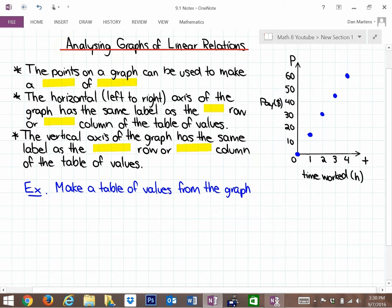The first thing to understand is that the points on a graph, these points here, these five points, can be used to make what we call a table of values.